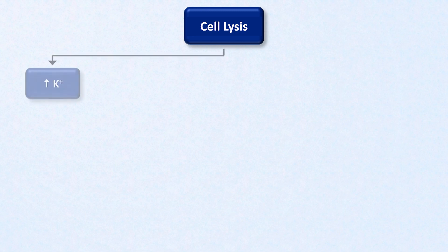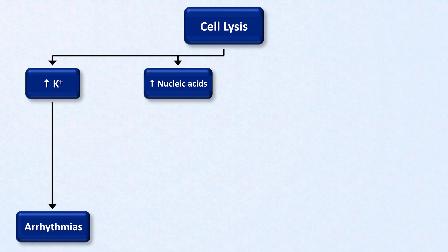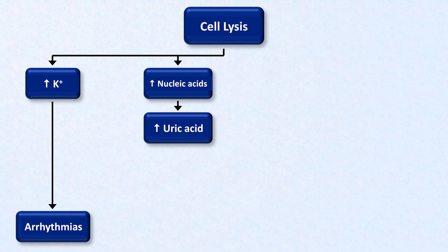First is potassium, which has a much higher intracellular than extracellular concentration. The subsequent hyperkalemia can lead to arrhythmias. The nucleic acids DNA and RNA are released and metabolized via several steps into uric acid. Uric acid is poorly soluble in water, particularly in the usually acidic environment of the renal tubules and collecting system, where urate can be deposited.